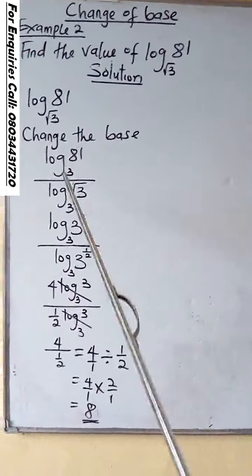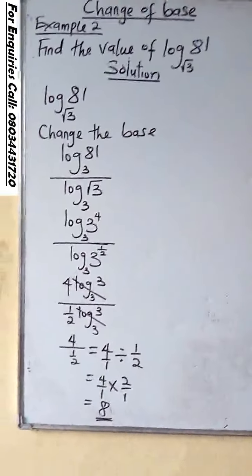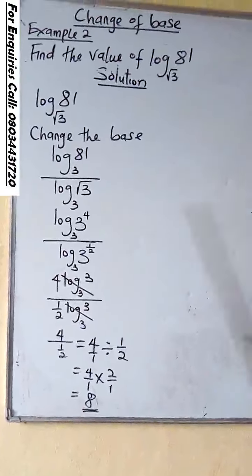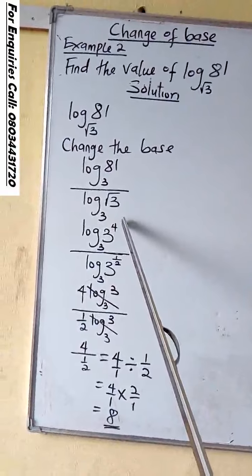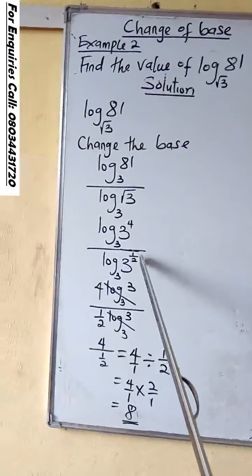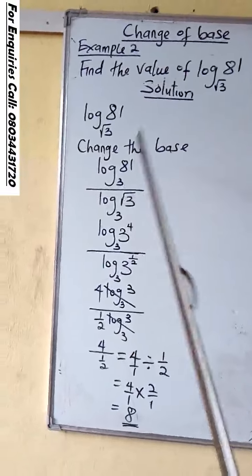You can also choose to use 9, but it will make your work look cumbersome. Now, 81 is 3 raised to the power 4. While square root means raised to the power 1/2. You can see why we should use 3.